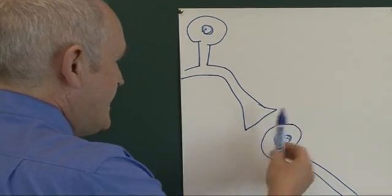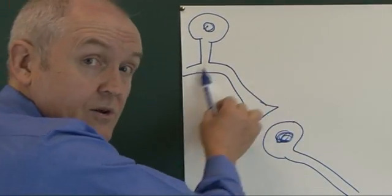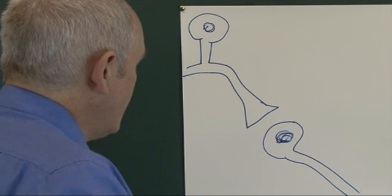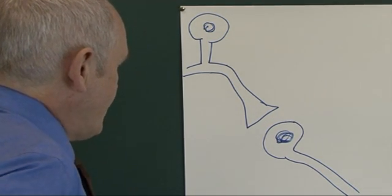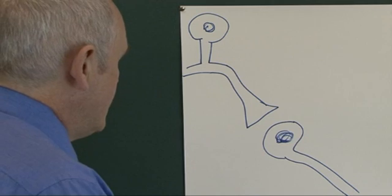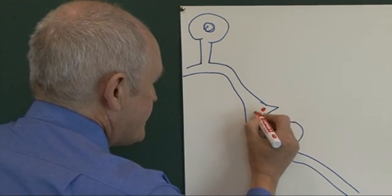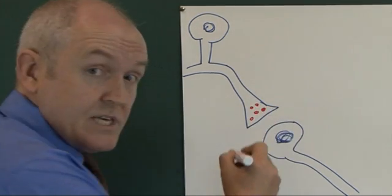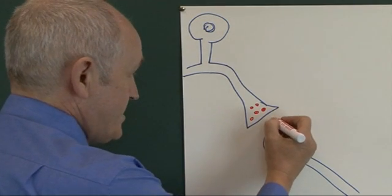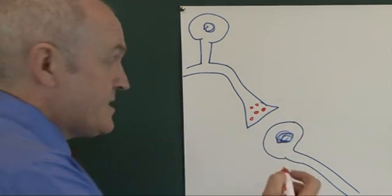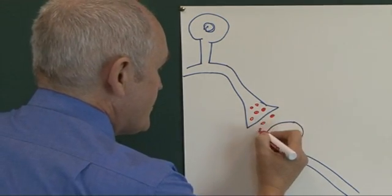The secondary neuron is in the dorsal horn of the spinal cord. We know that what happens is neurotransmitters are released from the presynaptic neuron—substance P or glutamate or whatever it is—diffuse across the synaptic gap.